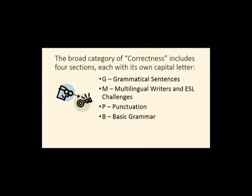In the correctness section, you'll find four subsections, and each of those have their own capital letters. G is grammatical sentences, M is multilingual writers and ESL challenges, P is punctuation, and B is basic grammar.